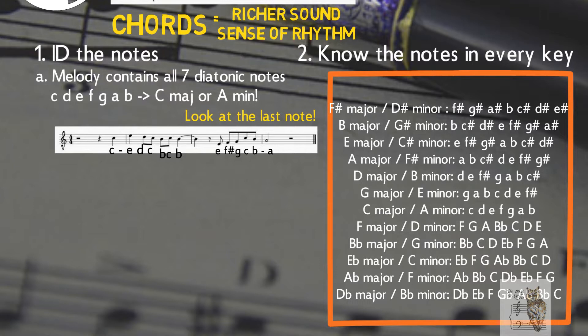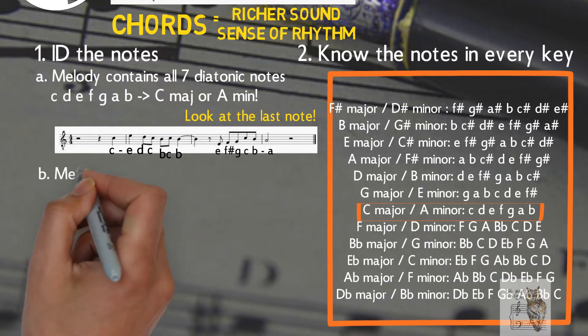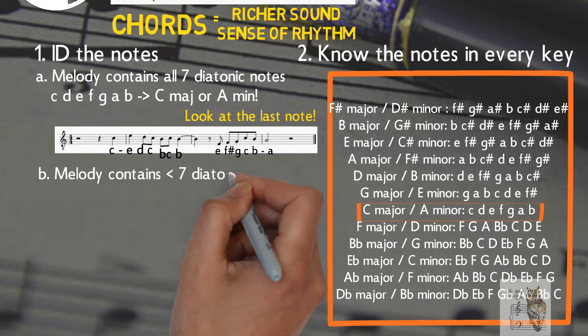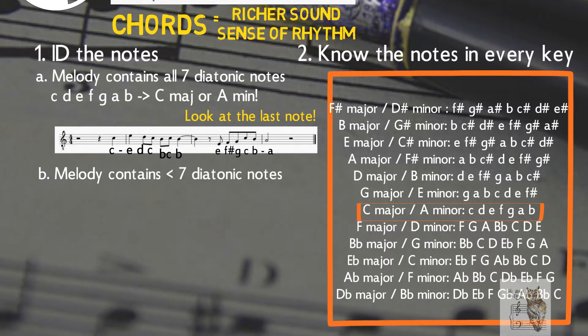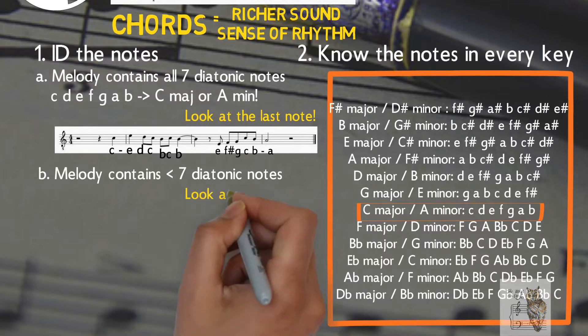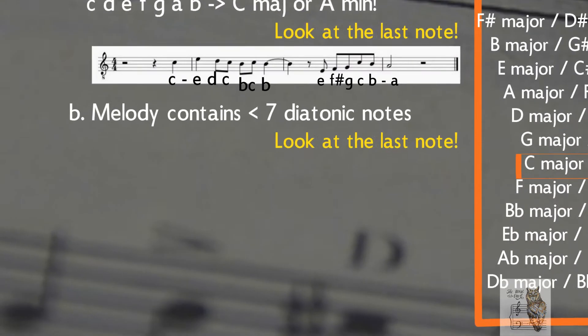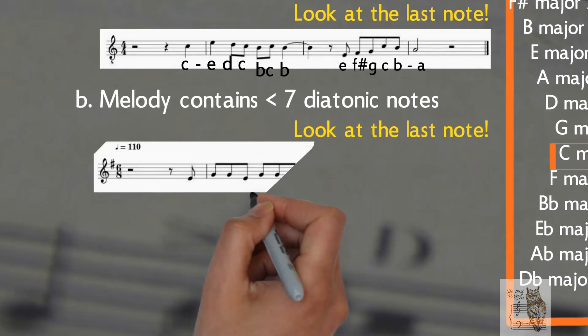In the second case, your melody contains less than seven notes — let's say G, A, B, D, E, F sharp. So you can either be in G major / E minor or D major / B minor. Again, look at the last note. Let's take an example in E minor.